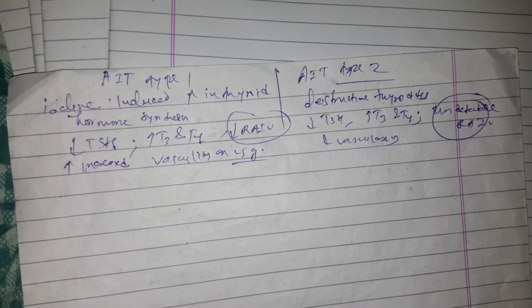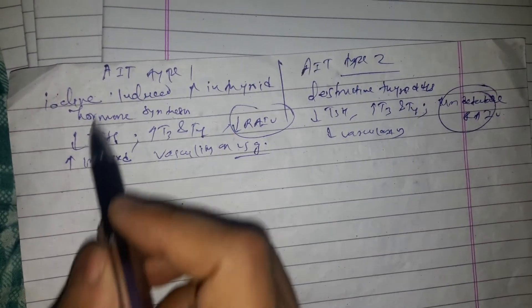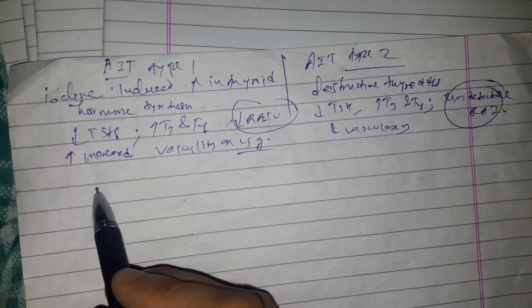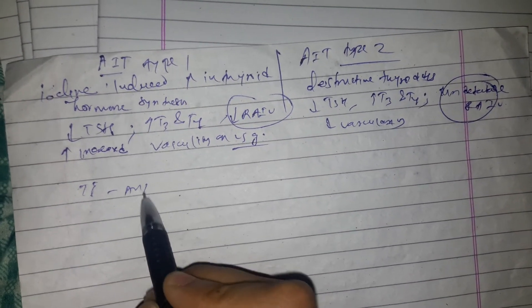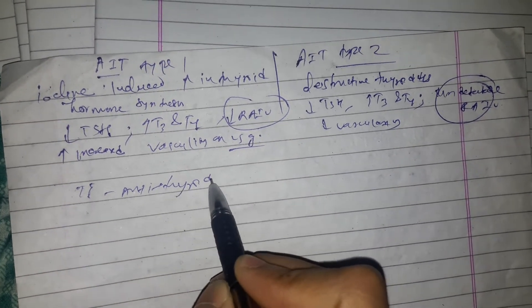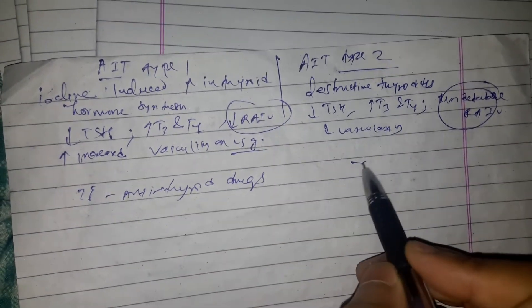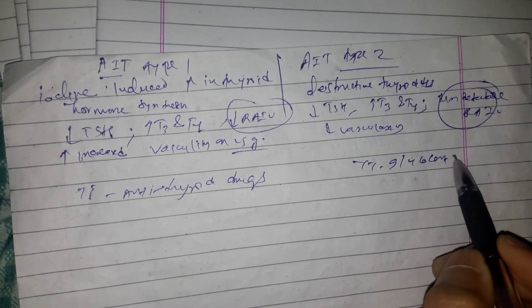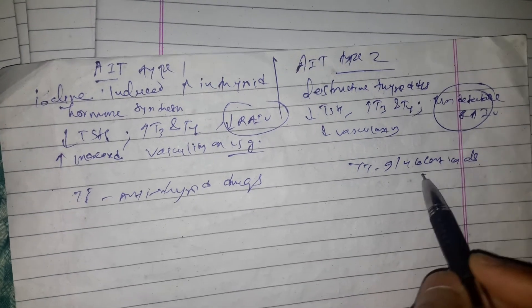For treatment: Type 1 AIT is treated with antithyroid drugs, while Type 2 AIT is treated with glucocorticoids.